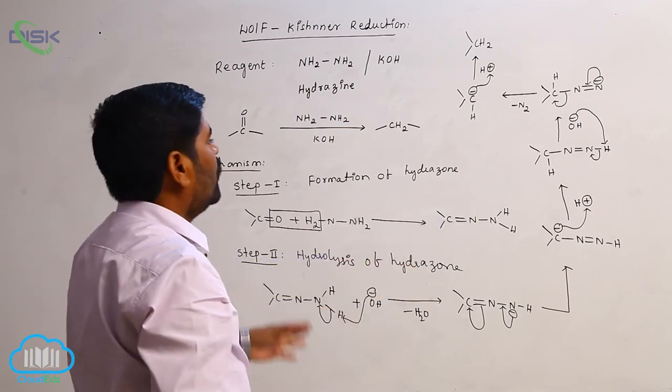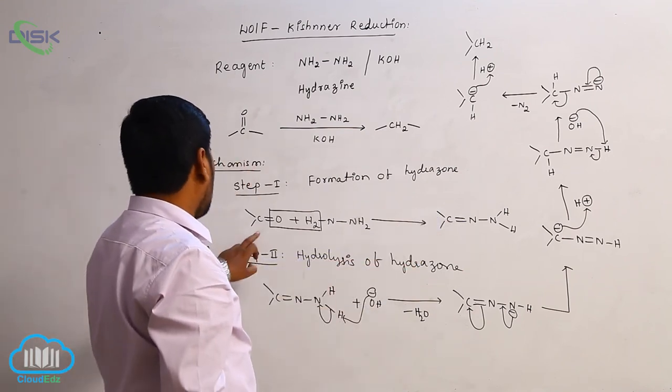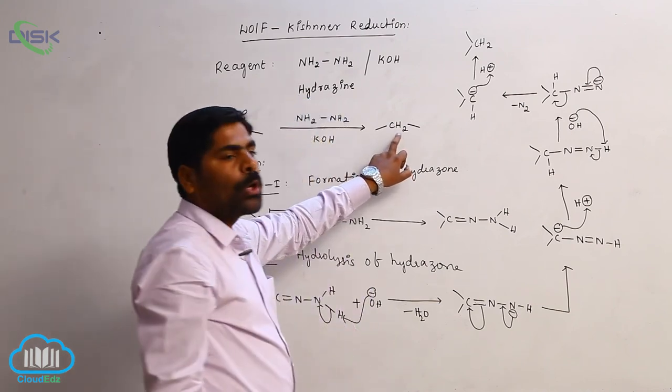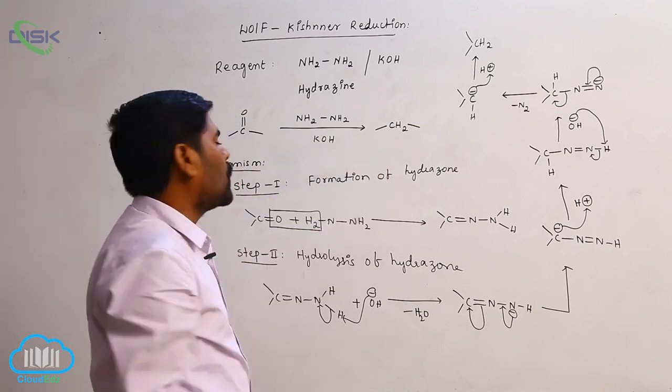Hydrogen here reacts with H plus. So finally it converts into CH2. This is the mechanism of Wolf-Kishner reduction. Therefore, C double bond O group converts into methylene group.